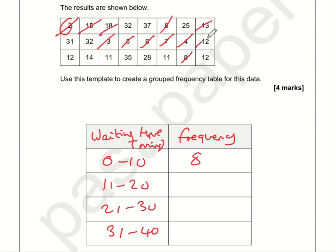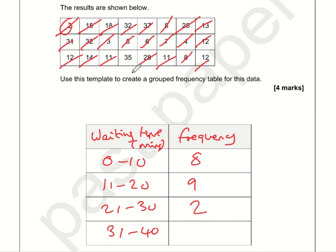For 11 to 20, that's all the numbers beginning with a one: one, two, three, four, five, six, seven, eight, nine — so nine. For 21 to 30, we need to be careful there are no 20s, so everything beginning with a two: just two. For 31 to 40: one, two, three, four, five. Let's check — 8 plus 9 is 17, no wait: 8 plus 2 is 10, plus 9 is 19, plus 5 is 24. That's 24 numbers, which matches perfectly.